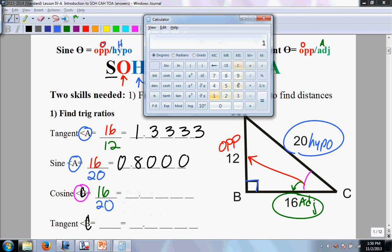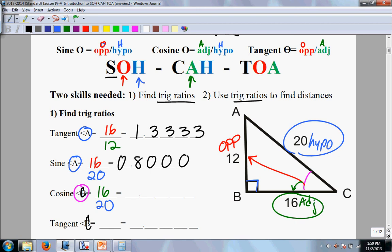So now we do 16 divided by 20, and we already did that, and it's 0.8. So look very carefully, the sine of angle A and the cosine of angle C are the same thing.